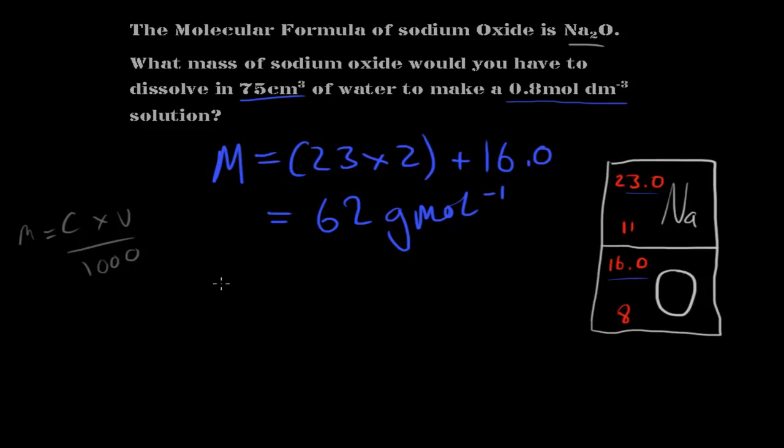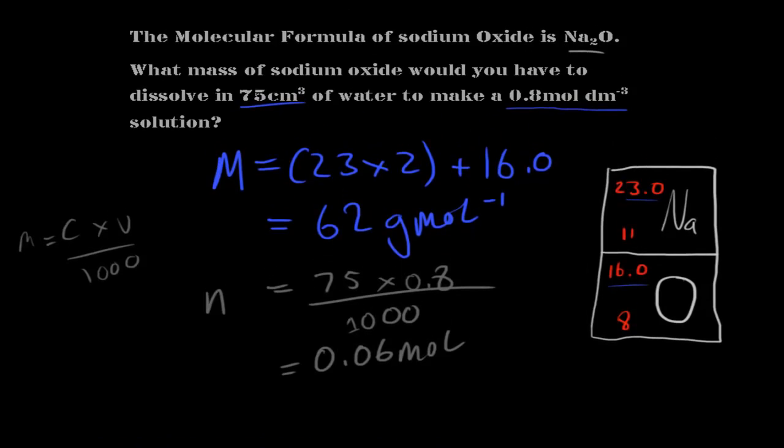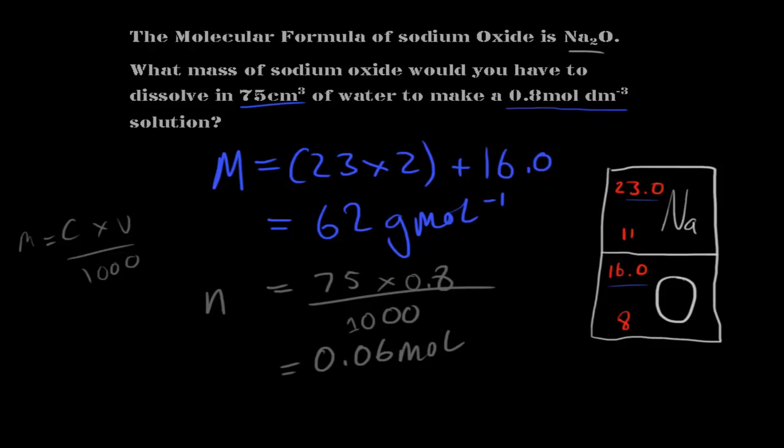So the number of moles, n, is equal to 75, this being the volume, multiplied by 0.8 divided by 1000. And that equals 0.06 moles. Okay, so now I have the molar mass and I have the number of moles. So I can use that equation that mass equals moles multiplied by molar mass. So let me just use that now.